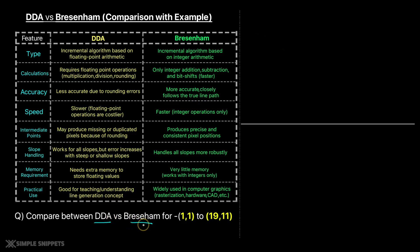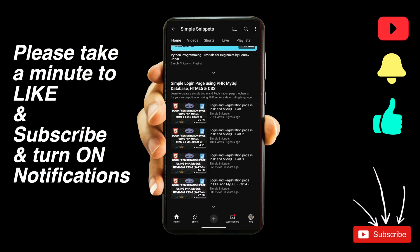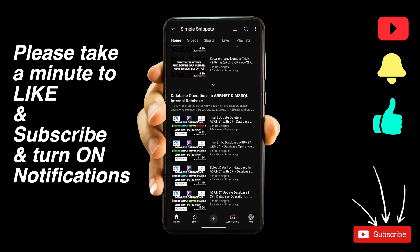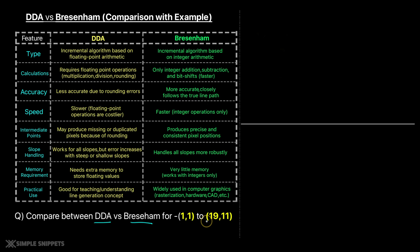Before we start plotting these points, I'm assuming you guys already know what DDA and Bresenham line drawing algorithms are. If not, the previous four videos in this computer graphics playlist covered both topics in depth — theory and practical side. We understood the theory, the working, and we also wrote C++ programs to implement these two algorithms. Here we are just comparing the two with the assumption that we already know both algorithms.